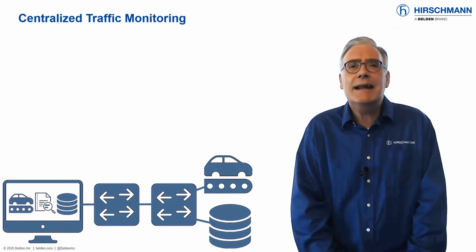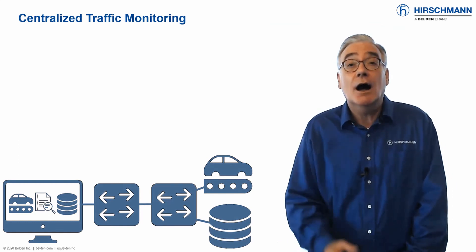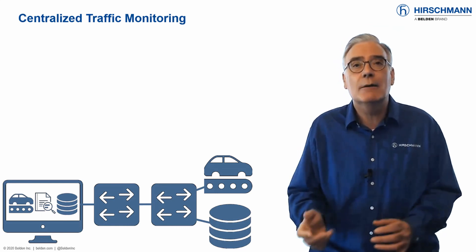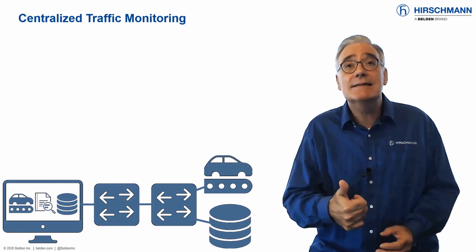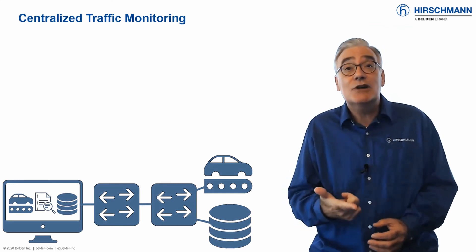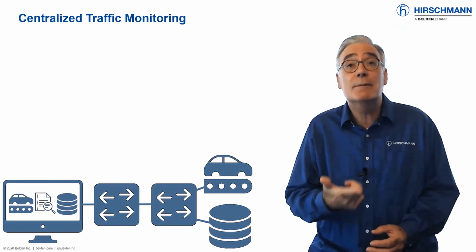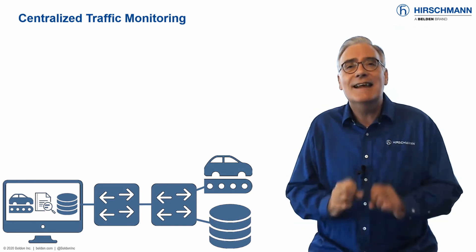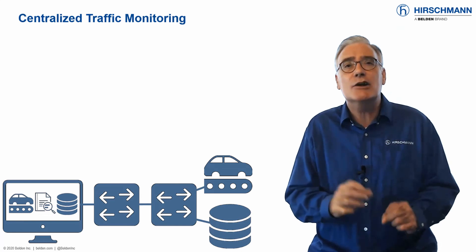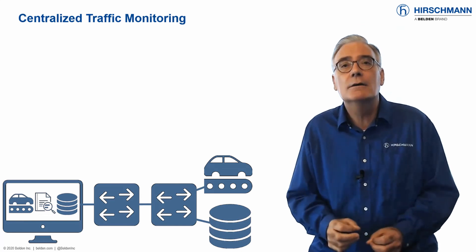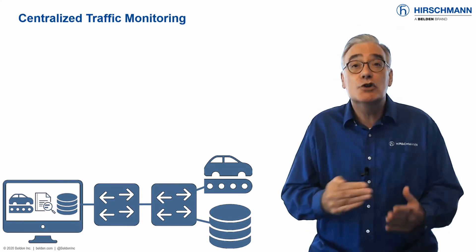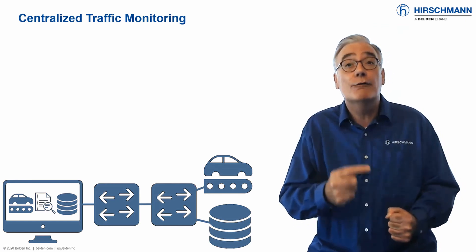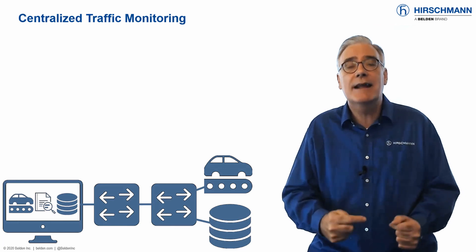Changes in network traffic patterns are a good indicator that something is amiss on your network. New devices appear, devices which have never talked to each other before start communicating, and traffic loads increase. These are typical symptoms that you need to be aware of. Switches offer two methods of centrally collecting and analyzing data from remote parts of a network.